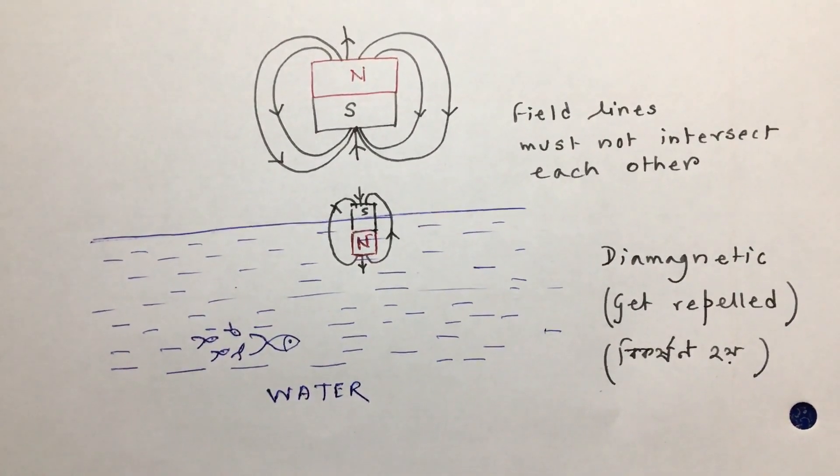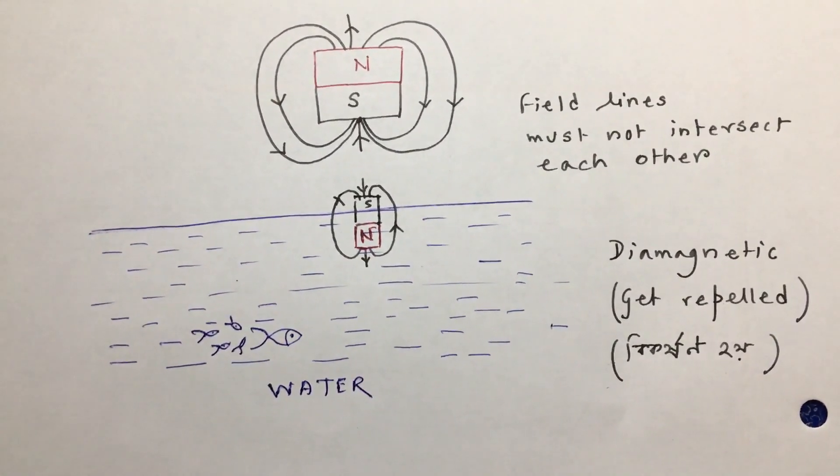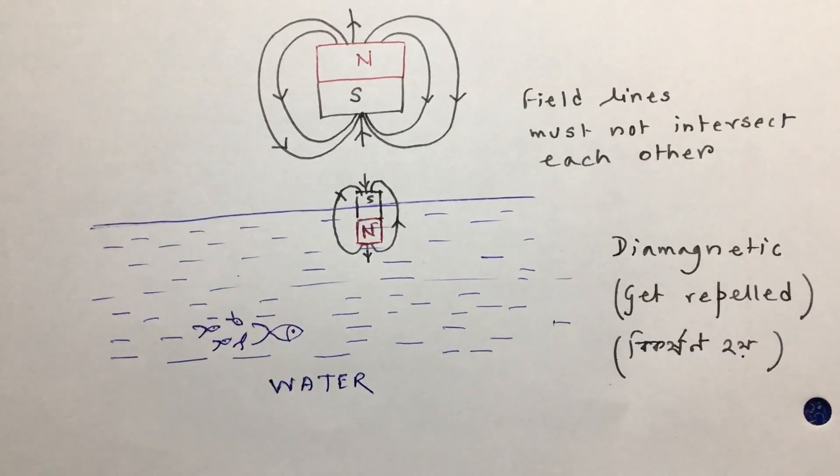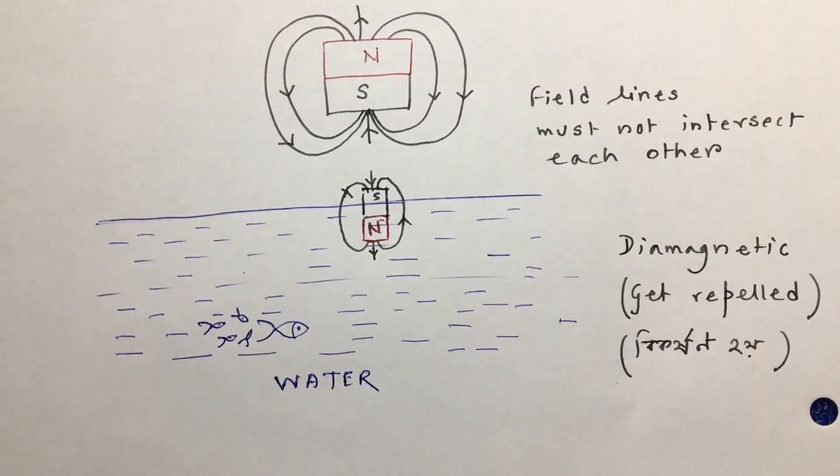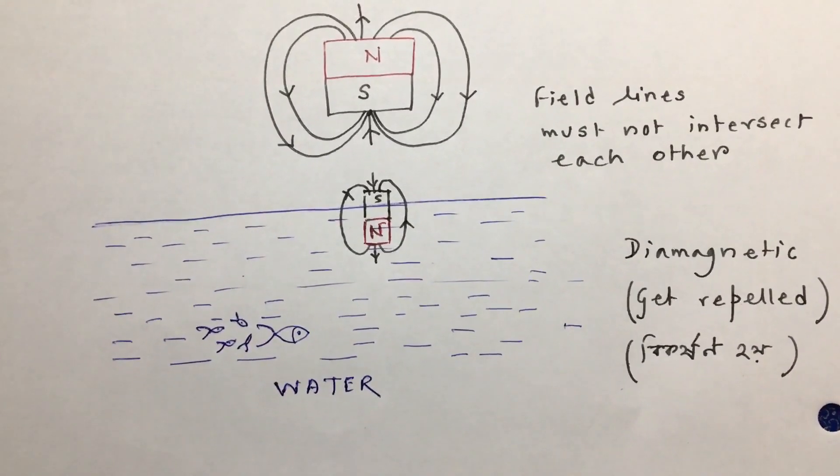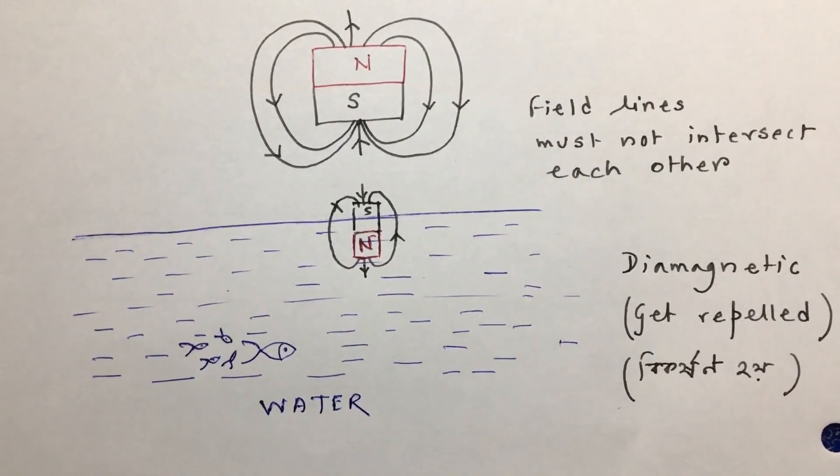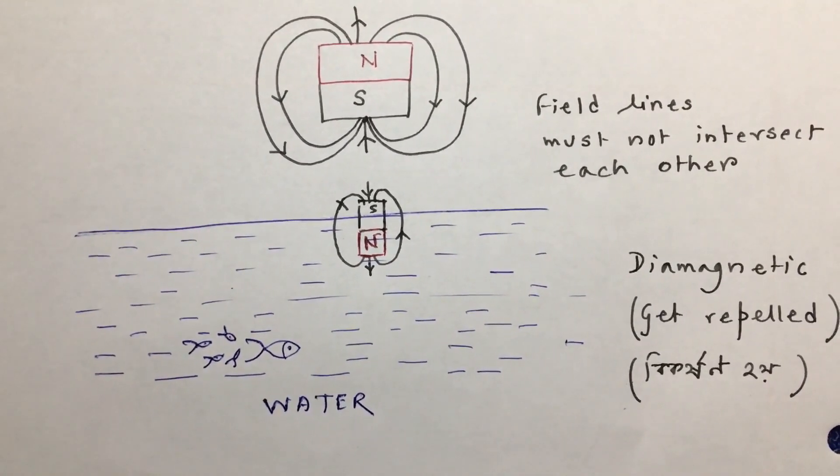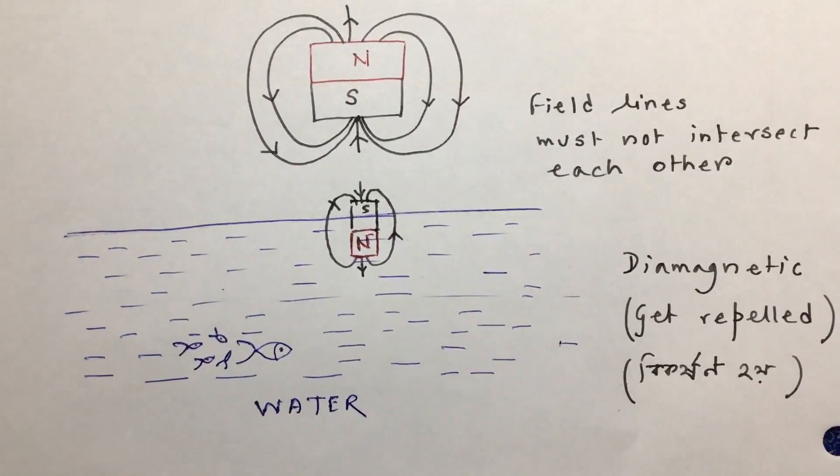This is because of the fact that water is itself a diamagnetic substance. A diamagnetic substance is one which does not like magnets. Rather, they repel magnets but will oppose the approaching one. For example, in this case...